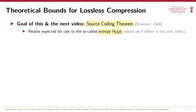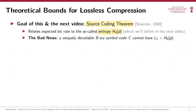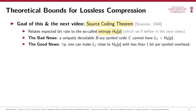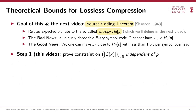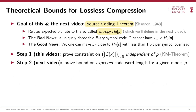I like to think of the source coding theorem as two parts: the bad news and the good news. The bad news states that it is not possible to find a uniquely decodable binary symbol code whose expected codeword length is smaller than some fundamental lower bound, namely the entropy. But the good news states that this fundamental lower bound is meaningful, and we can almost achieve it with less than one bit of overhead. Our proof takes two steps: in this video, we put the symbol probabilities aside and prove a general constraint on codeword lengths of uniquely decodable symbol codes. In the next video, we analyze this constraint given symbol probabilities p and derive bounds on expected codeword length, generalizing beyond symbol codes to arbitrary lossless compression codes including stream codes.